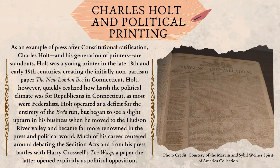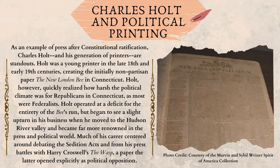Charles Holt and Political Printing. As an example of press after constitutional ratification, Charles Holt and his generation of printers are standouts. Holt was a young printer in the late 18th and early 19th centuries, creating the initially non-partisan paper The New London Bee in Connecticut. Holt quickly realized how harsh the political climate was for Republicans in Connecticut, as most were Federalists. Holt operated at a deficit for the entirety of the Bee's run, but began to see a slight upturn in his business when he moved to the Hudson River Valley and became far more renowned in the press and political world. Much of his career centered around debating the Sedition Acts, and from his press battles with Harry Crosswell's The Wasp, a paper the latter opened explicitly as political opposition.